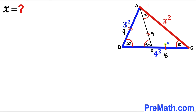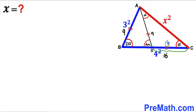We can see that the whole BC length is 16 and the CD length is 9. So therefore the remaining BD length is 16 minus 9, which gives us 7 units.